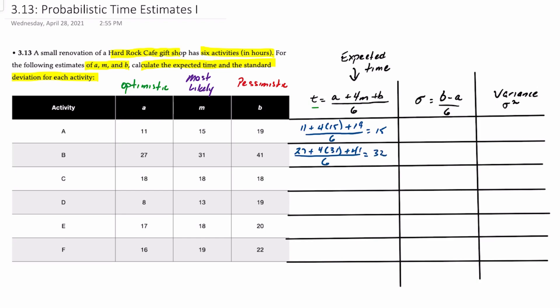And if we keep following that process, we should end up with 18 hours for activity C, 13.17 hours for activity D, 18.17 hours for activity E, and 19 hours for activity F.